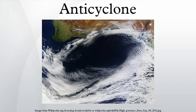Effects of surface-based anticyclones include clearing skies as well as cooler, drier air. Fog can also form overnight within a region of higher pressure. Mid-tropospheric systems, such as the subtropical ridge, deflect tropical cyclones around their periphery and cause a temperature inversion inhibiting free convection near their center, building up surface-based haze under their base.